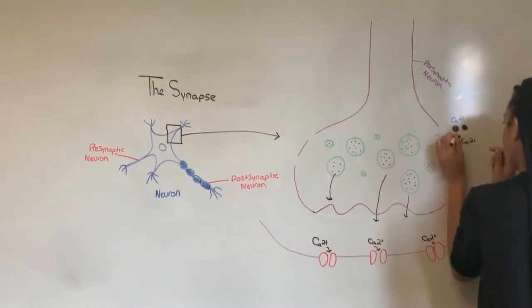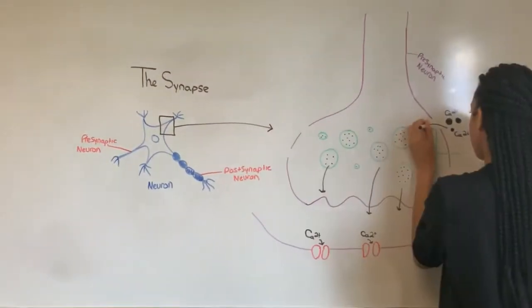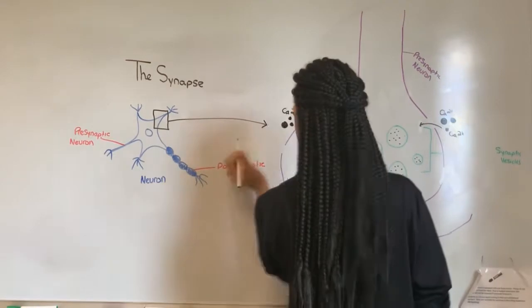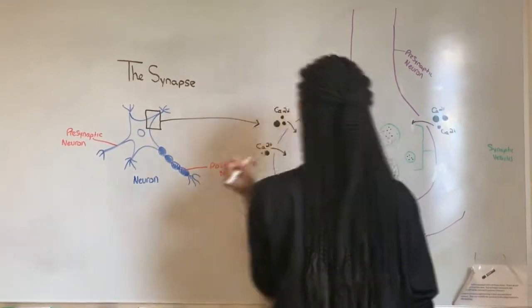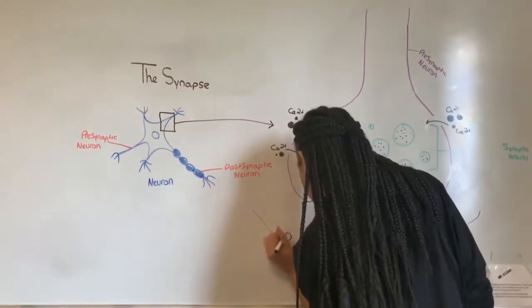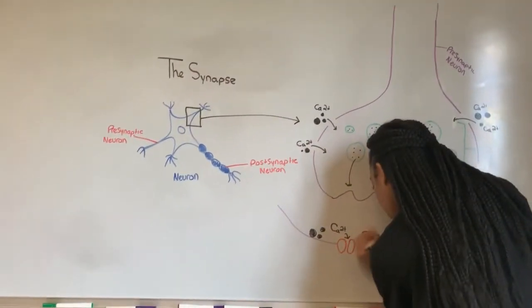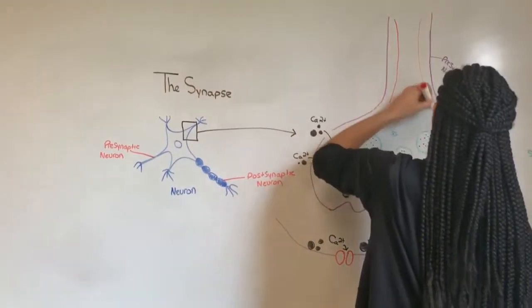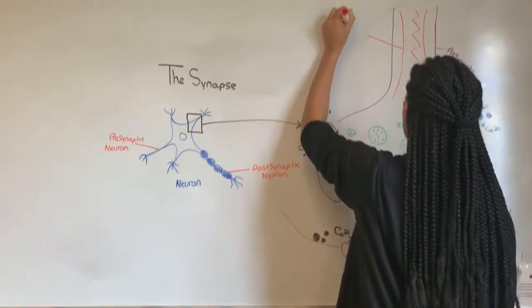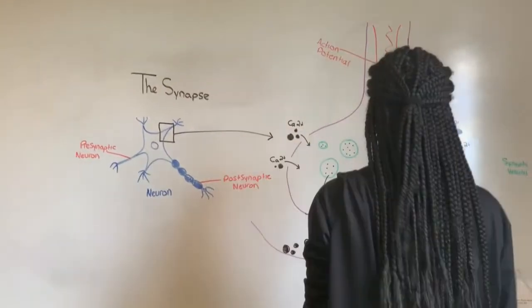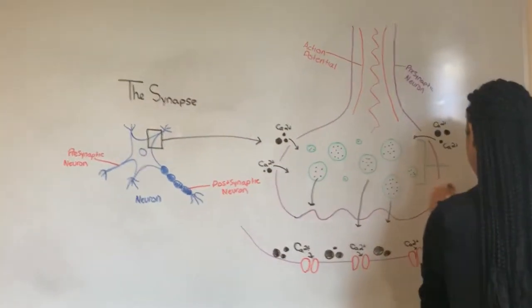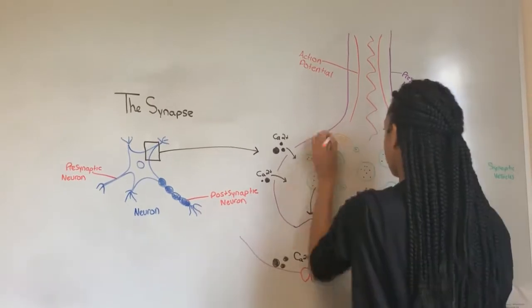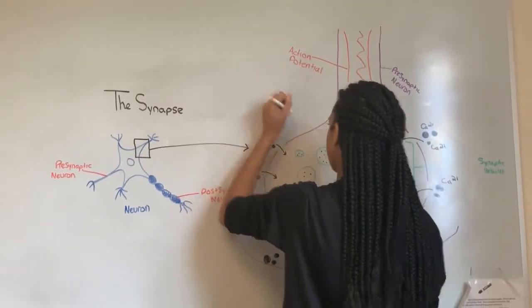The first step of the transfer of information across a chemical synapse is that the action potential arrives at the axon terminal, which causes the axon hillock to depolarize. Sodium and calcium channels open, and during this time, calcium floods down the electrochemical gradient into the terminal. This entry causes synaptic vesicles to release neurotransmitter by exocytosis to the synaptic cleft. Neurotransmitters diffuse across the cleft and bind to receptors on the postsynaptic membrane. The binding of neurotransmitters open ion channels caused by the receptor changing its shape. Graded potentials are then created.